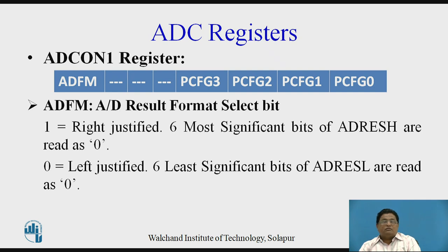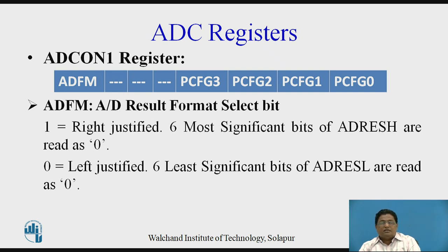The second register, ADCON1, has its bit format shown here. The MSB bit, defined as ADFM, is called the A-to-D result format select bit. If ADFM is 1, the result is right-justified, meaning the 6 most significant bits of ADRESH are read as 0. If this bit is reset, the result is left-justified and the 6 least significant bits of ADRESL are read as 0.